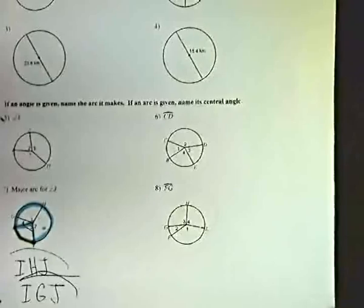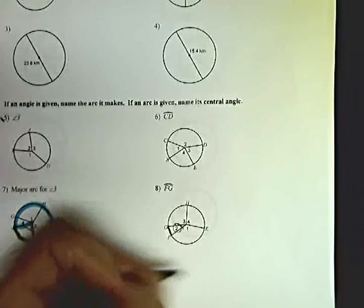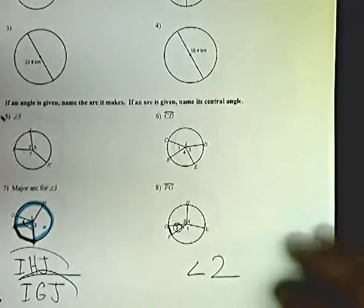Now let's look at 8. Number 8 says F-G. F-G is right here, and it's conveniently marked as a 2, so number 8 is angle 2.